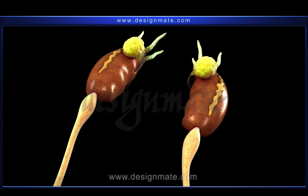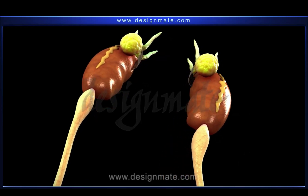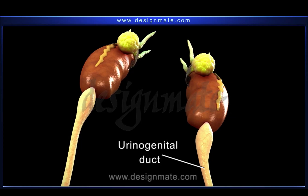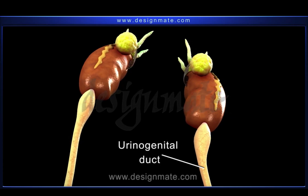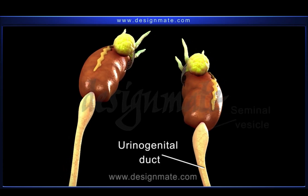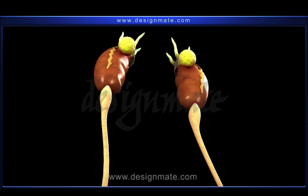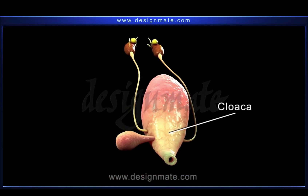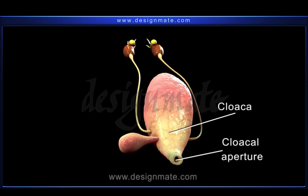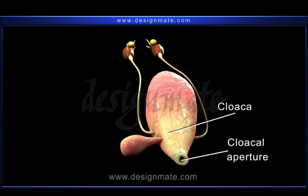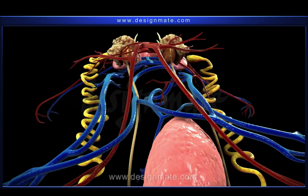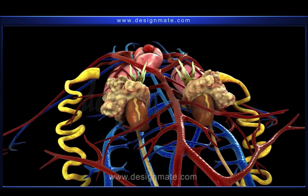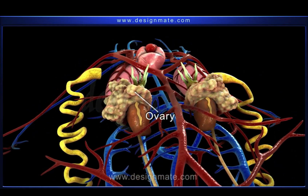This duct continues into the respective ureters or urinogenital ducts, which carry the urine as well as the sperms through the seminal vesicle into the cloaca and opens to the outside by the cloacal aperture. The reproductive system in a female frog comprises a pair of ovaries.